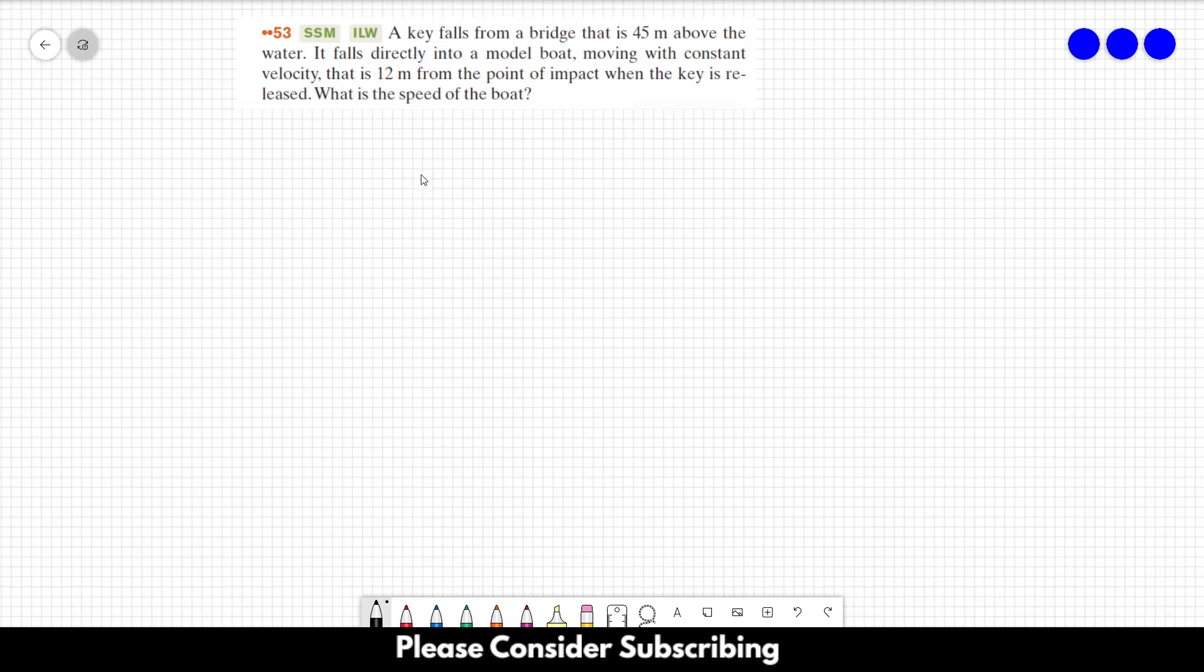What is the speed of the boat? So what's happening here: we have a bridge over here, and then we have a key that falls. The key is falling, and then we have a...